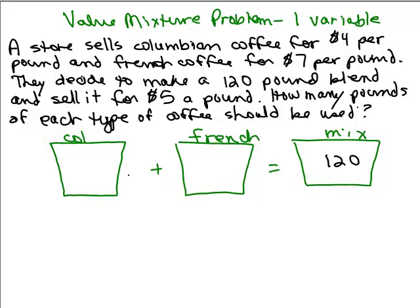I'm going to use a single variable so let's say I'm going to call the Colombian coffee, the amount of Colombian coffee I want to use C. So C pounds, that might stand for 100 pounds for instance. And I need to know what to put in for how many pounds of French coffee. But all I know is there are 120 pounds total.